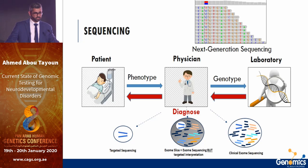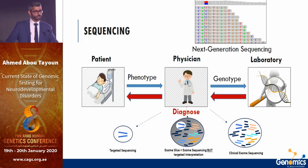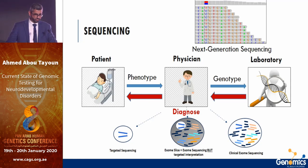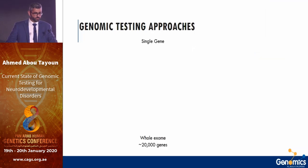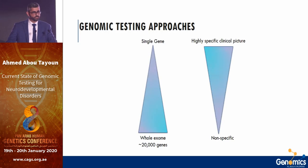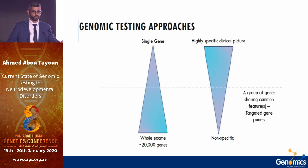We're seeing a shift — we still need good phenotyping, but more cases are being worked up from genotype backwards, with genotype-driven delineation becoming equally important to phenotype-driven diagnosis. With all these options, the general principle is: the more specific the clinical picture, the more targeted and focused genetic testing should be. As things get broader, you cast a wider net up to the whole exome, with targeted gene panels in between.